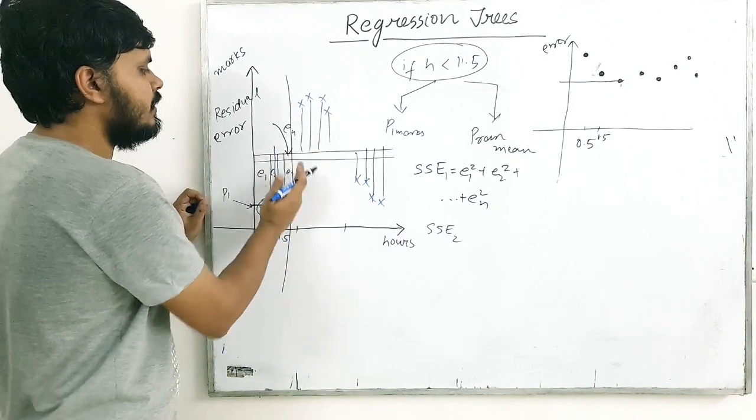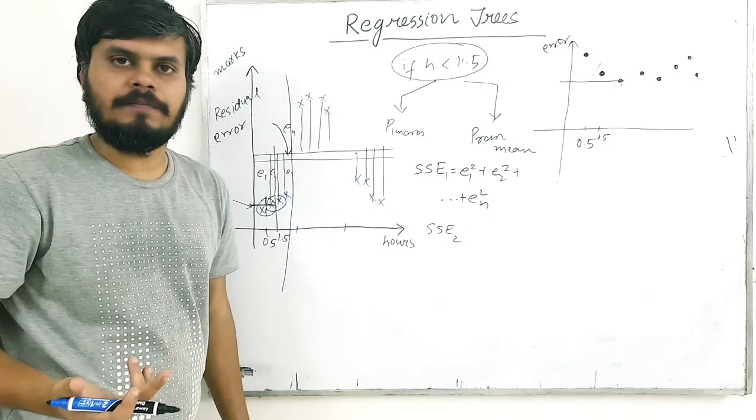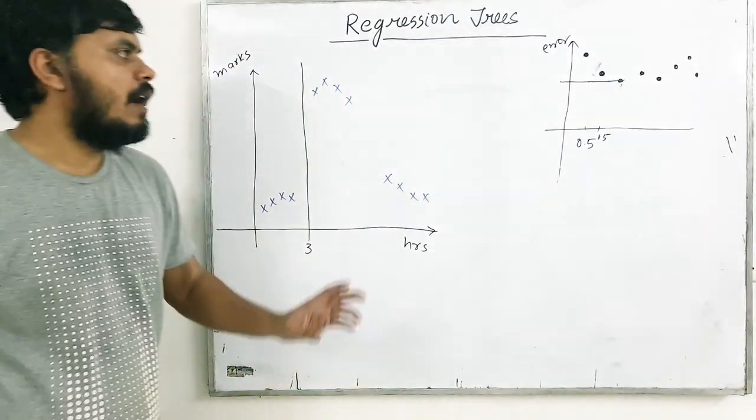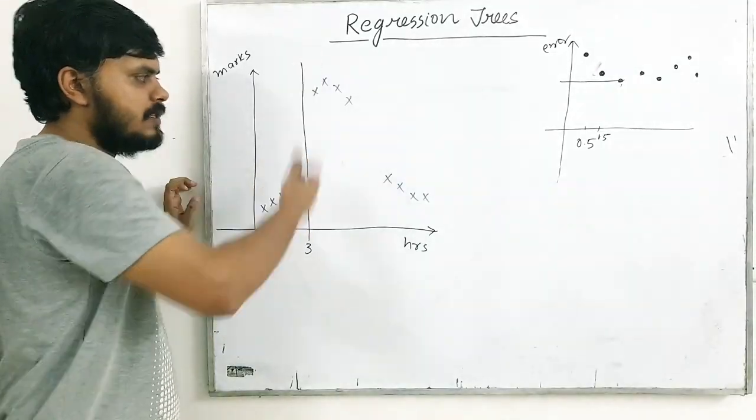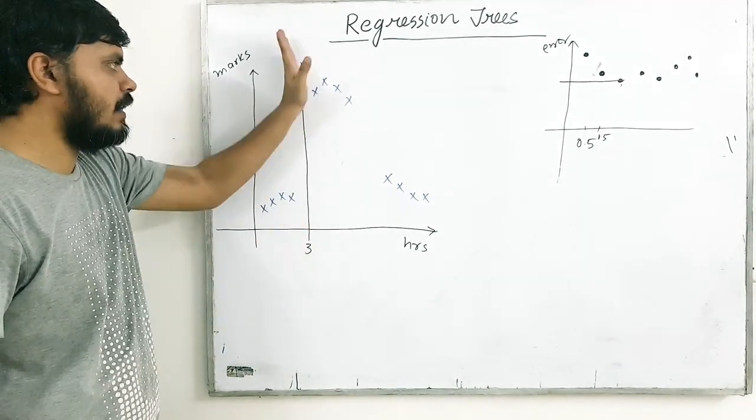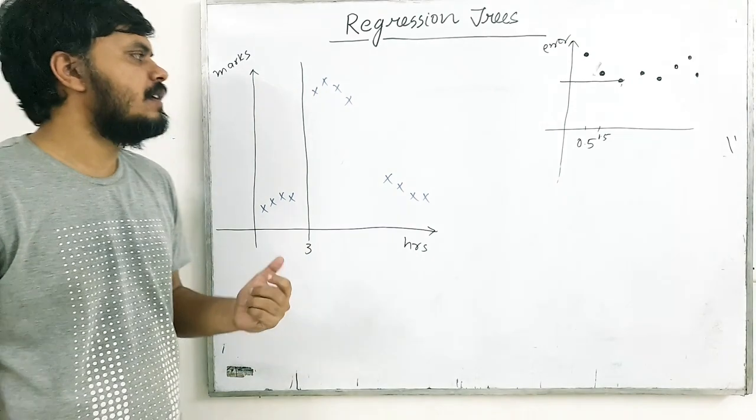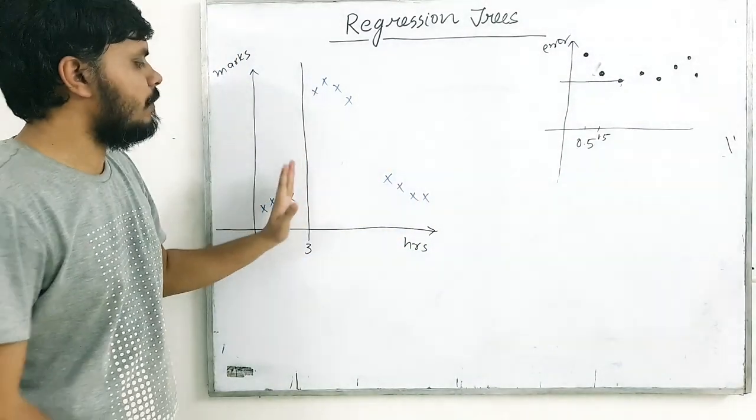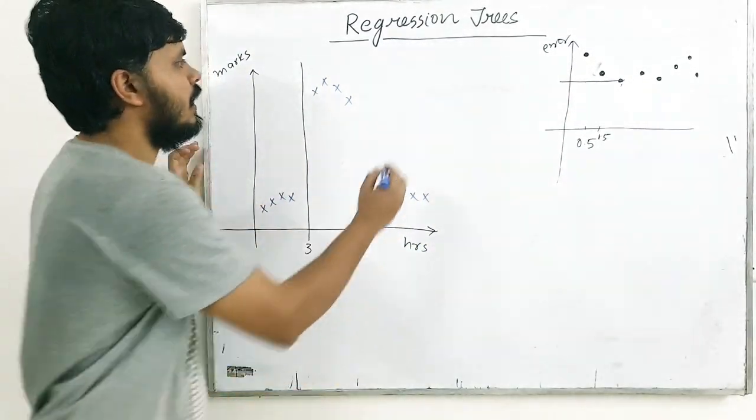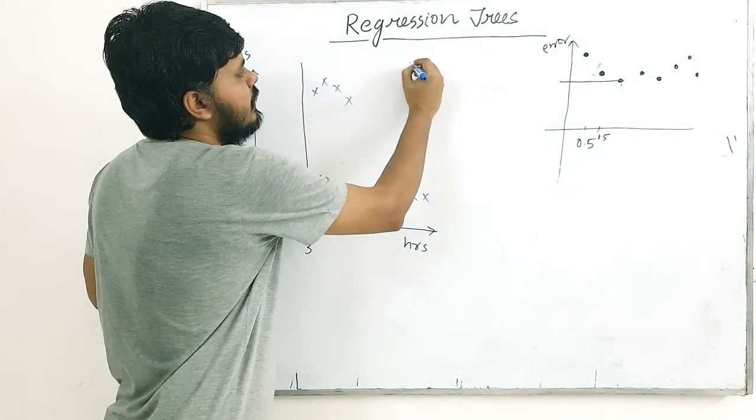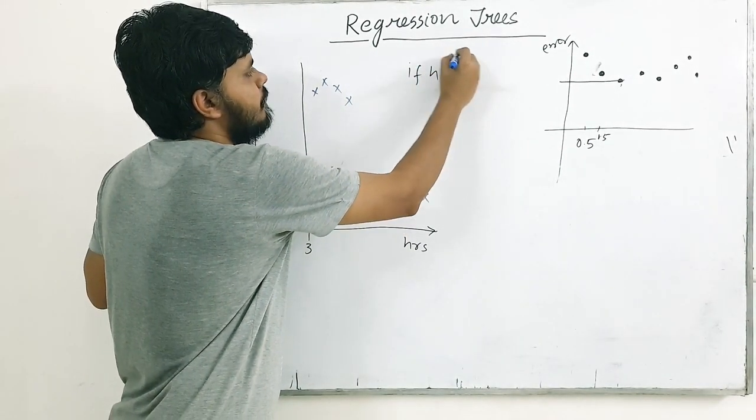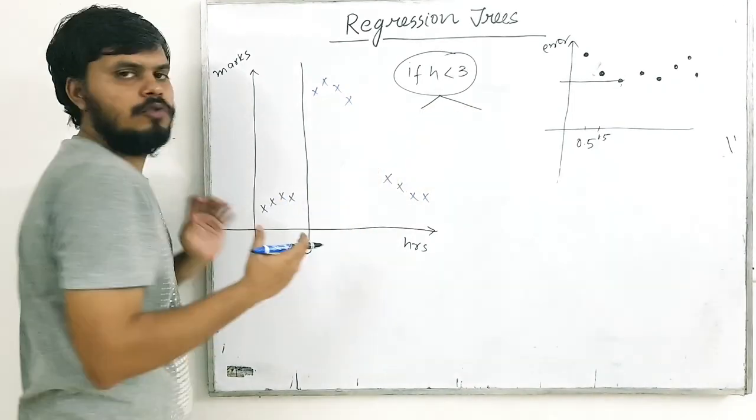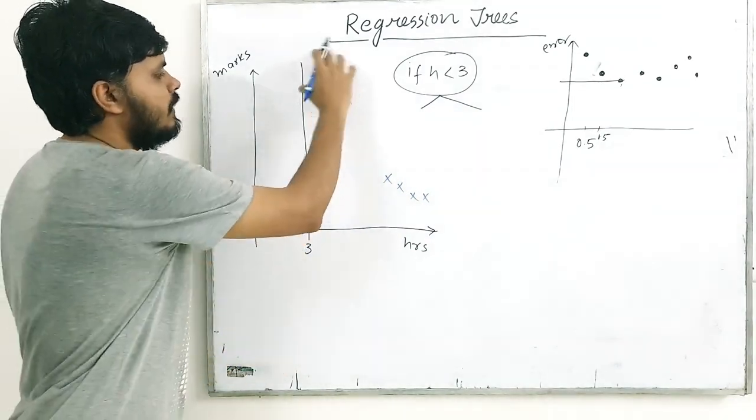So you can see the error is minimum at some particular splitting criteria. For this residual error minimum, that is our first split. Let's say this one is the first split, right? Now what we think is that this one is in one group and this one is in the other group ok. I hope the whole thing is clear. So now you can see after the first iteration, we got to know that this split is the most effective split in the sense this split has the sum of square error the minimum. So we got to know that this is our first criteria. So here this decision tree has become the first rule. If hours is less than 3, this is the first split.